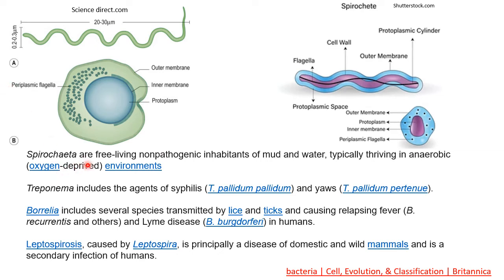Spirochetes are free-living, non-pathogenic inhabitants of mud and water. They are also known to typically thrive in anaerobic, that is oxygen-deprived, environments. That is the reason they can cause some harmful diseases to humans.